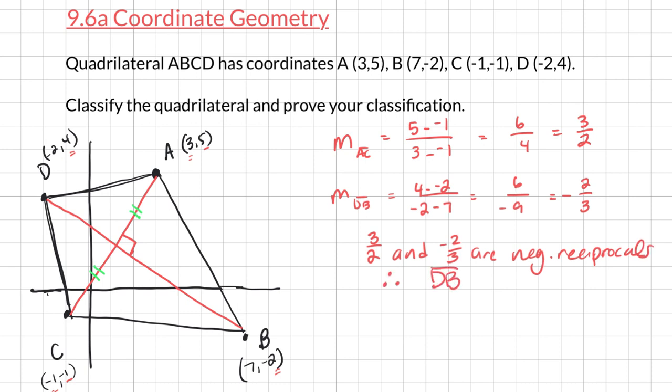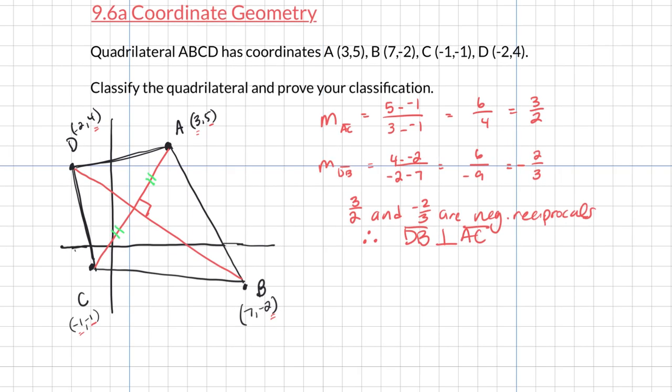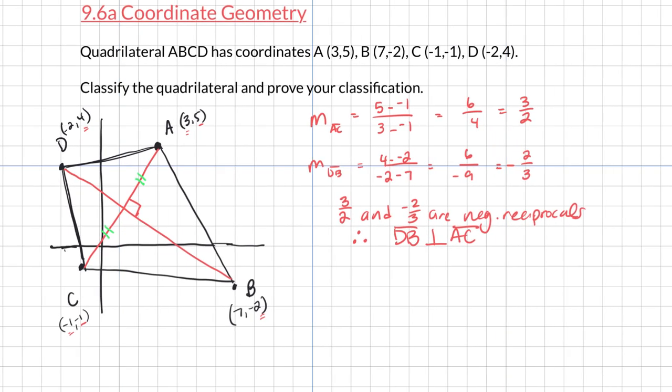Therefore, DB is perpendicular to AC. Next, I need to investigate whether or not this line DB goes through this midpoint right here. So I'm going to have to write an equation for line DB. This is much more involved a little bit. And I need to show that it goes through that midpoint. So first, let's find the midpoint of AC.